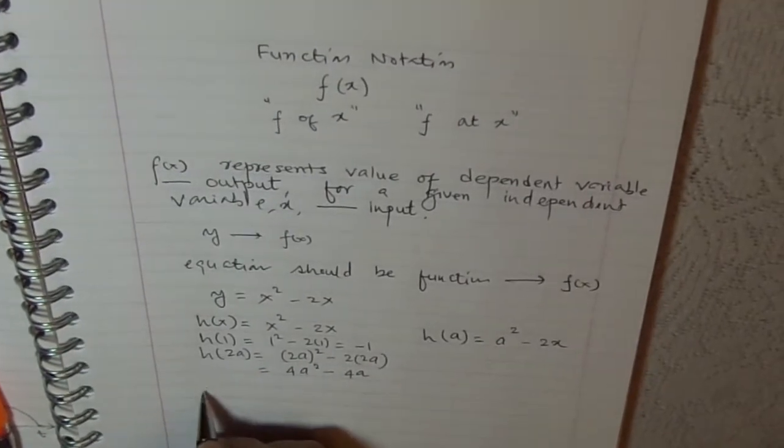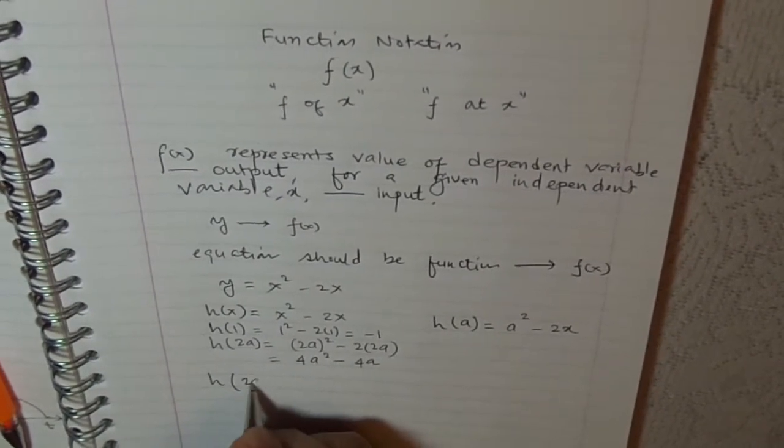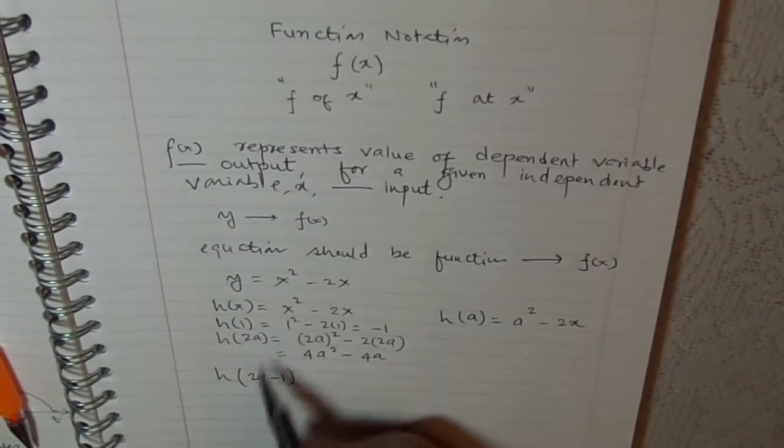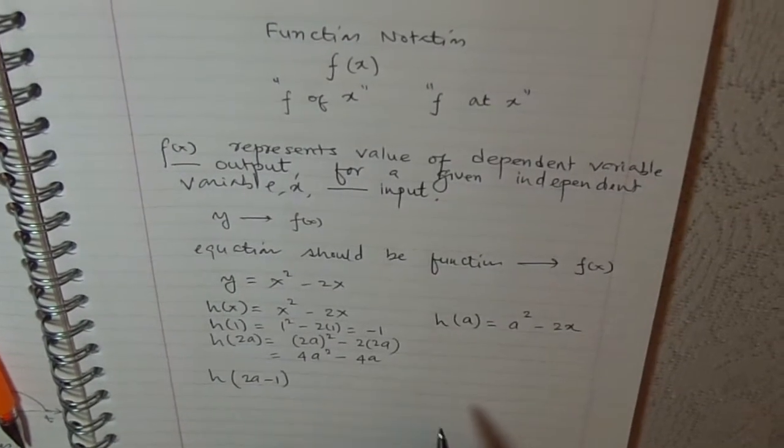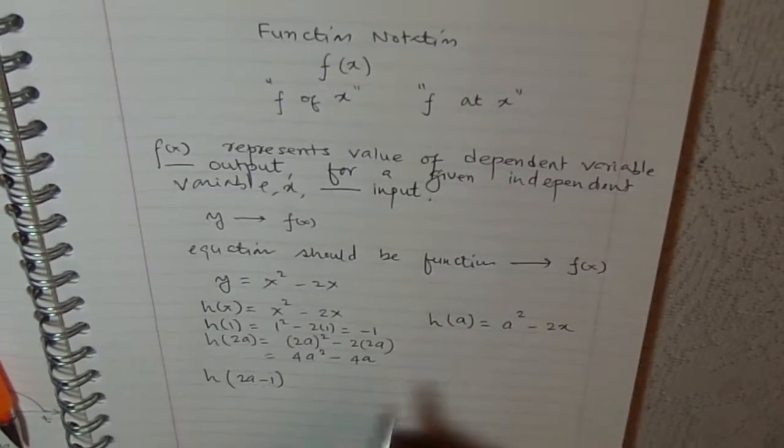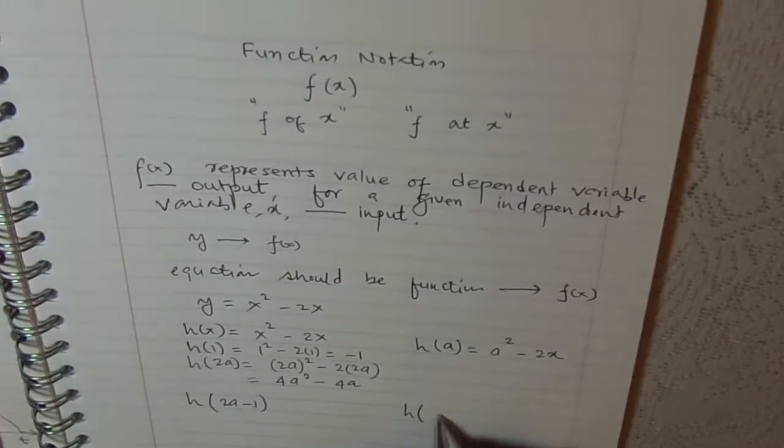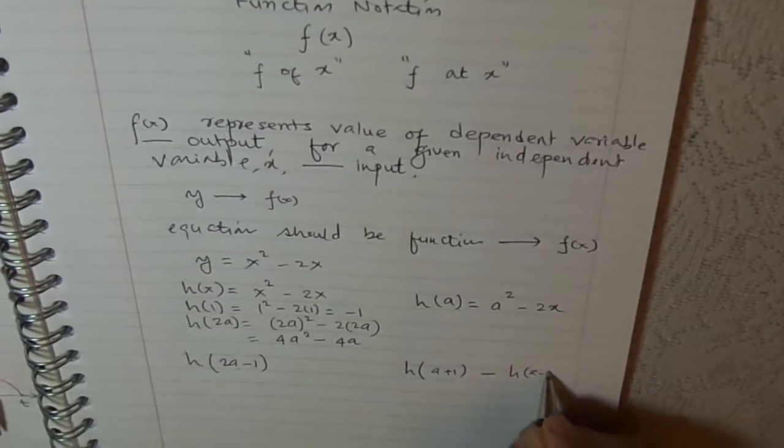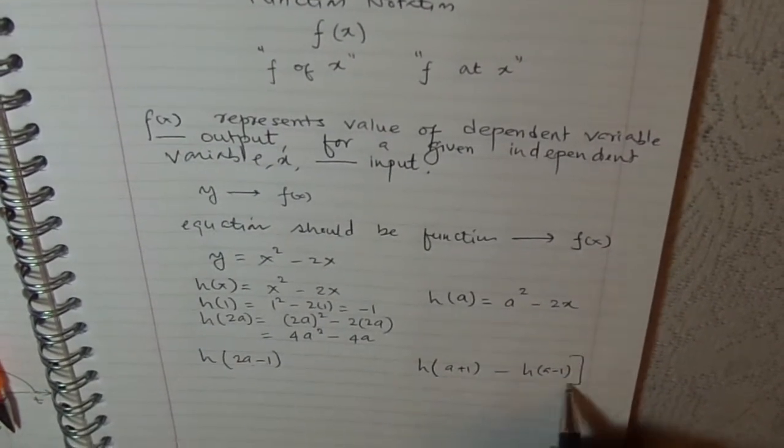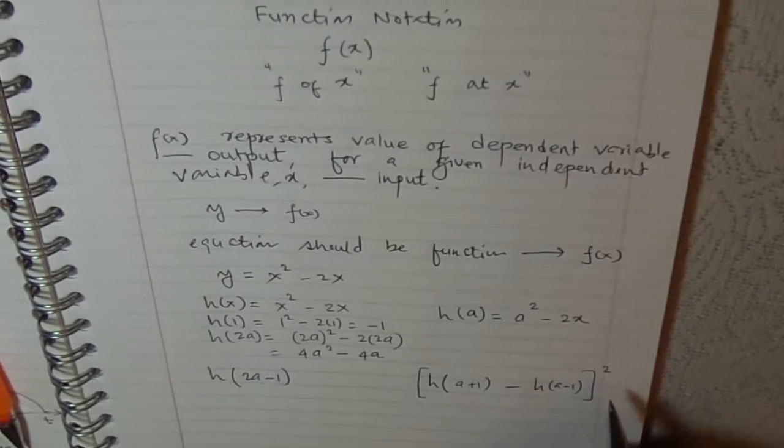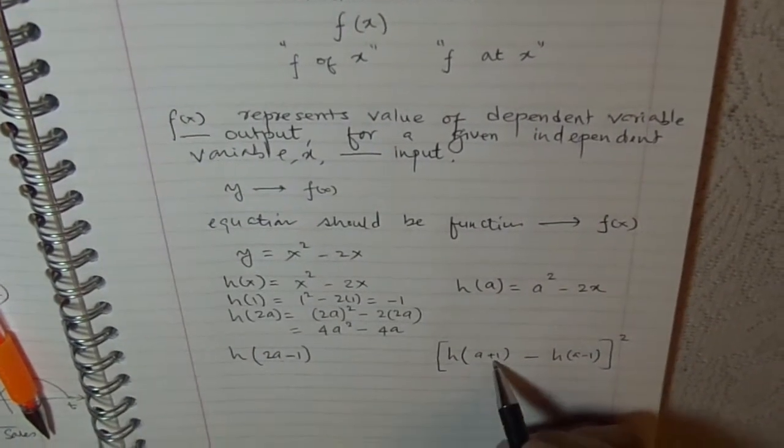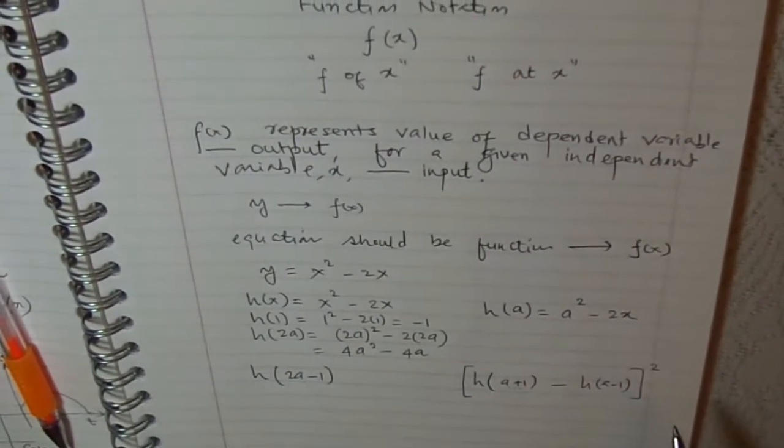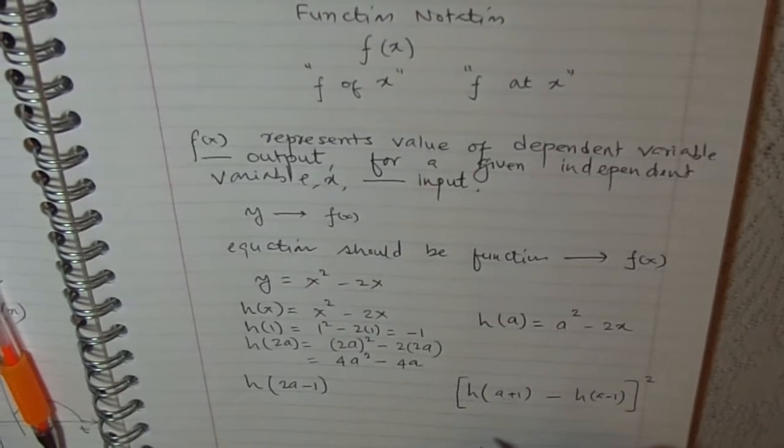So try doing something like this. Determine what is h(2a minus 1). Basically you need to replace x with 2a minus 1 and then evaluate the general function. You can also calculate h(a plus 1) minus h(a minus 1) whole squared. Basically plug in a plus 1 and then a minus 1, find the difference and square it. So that way it gives us more flexibility to work with equations.